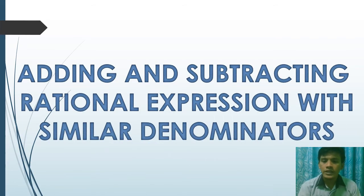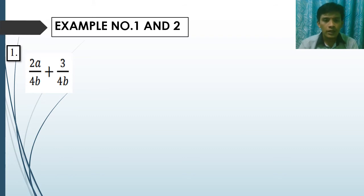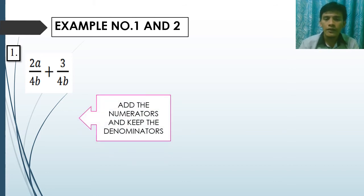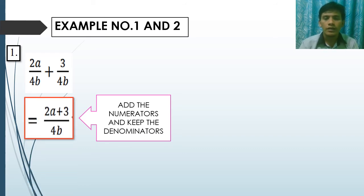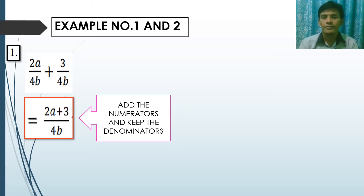Adding and subtracting rational expressions with similar denominators. Example number one: 2a over 4b plus 3 over 4b. The given problem has similar denominators, which is 4b. To solve that, add the numerators which are 2a and 3, and keep the denominator which is 4b. The result is 2a plus 3 over 4b. There are no like terms, so that will be our final answer: 2a plus 3 over 4b.